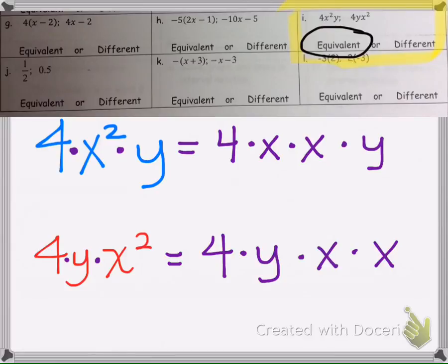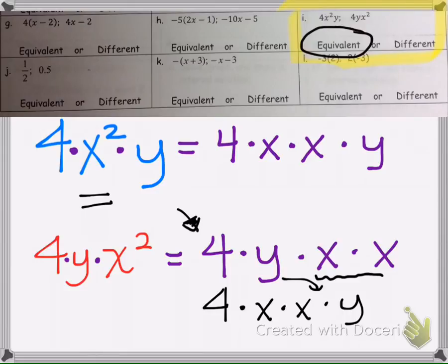So these are equivalent because typically when we write a variable expression, we write it in alphabetical order. So this particular one just isn't written in alphabetical order. So if we were to, we're allowed to move these x's right here, we can move them here, and then we can move the y at the end because the order when we multiply doesn't matter. So that's how we know that these are equal.